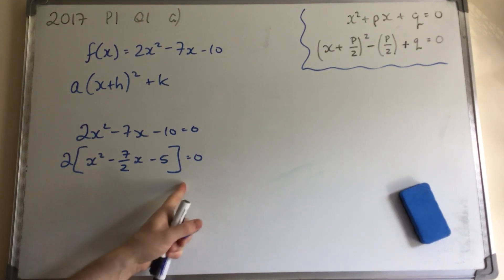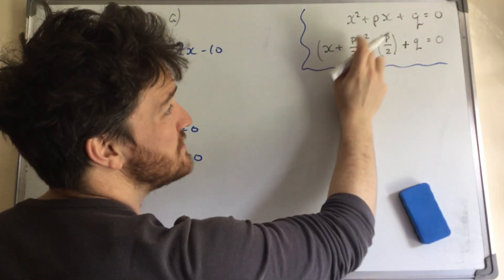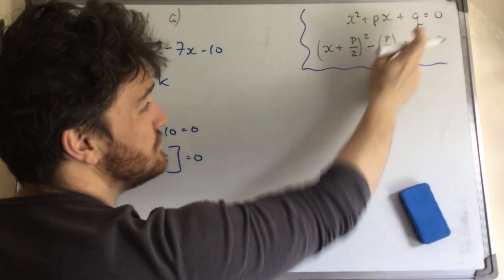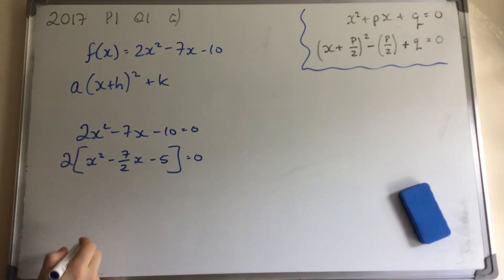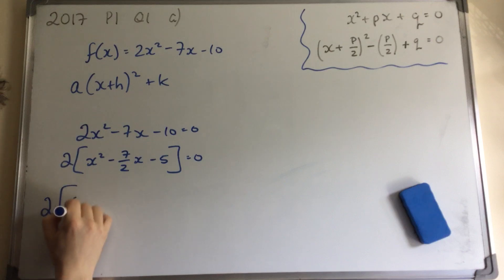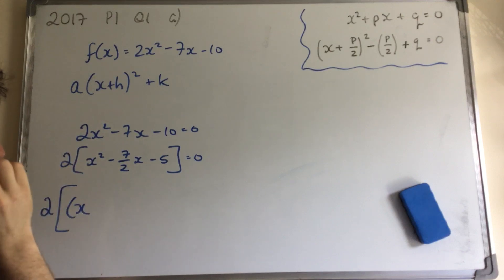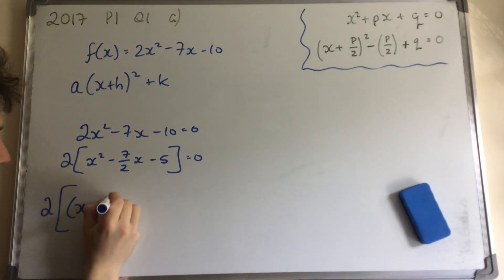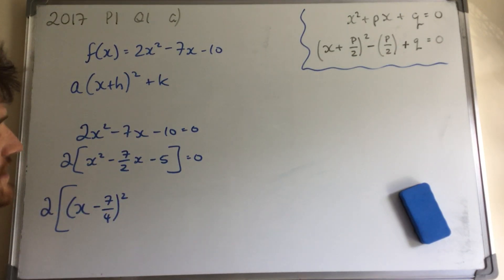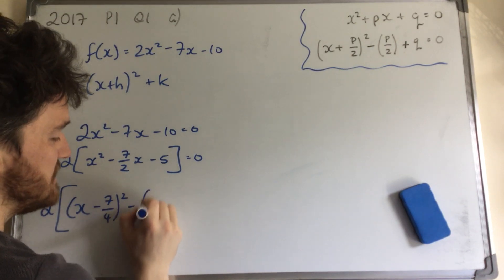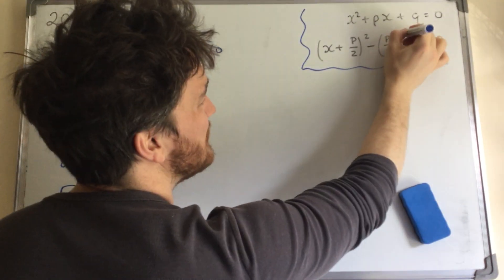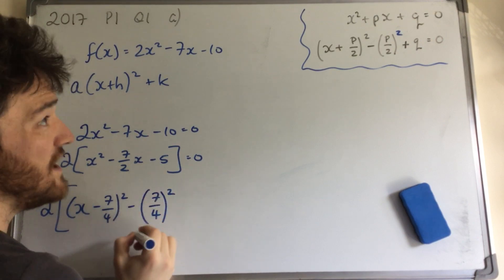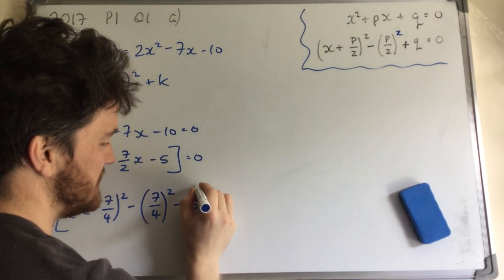Now, this part in here, I'm going to apply my rule. So the p is the number in front of the x, which in this case would be 7 over 2. And the q is the number on its own, which is the minus 5. So I get 2 times bracket x. 7 over 2 divided by 2 would be 7 over 4. So it's minus 7 over 4 squared minus 7 over 4 again squared plus q, which is minus 5 in this case.